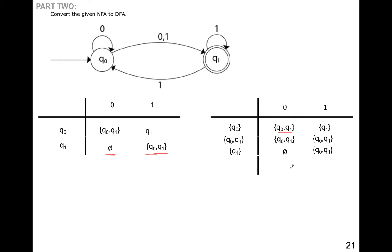Now I need to create another state which is phi. If 0 goes to phi it will remain in phi, and for 1 it will also remain in phi. Before converting to the state diagram, let's identify the initial state and the accepted state: Q0 is my initial state and Q1 is my final state. In converting, whenever I have Q1 in a combined state, that combined state is also a final state, so here we have two final states.